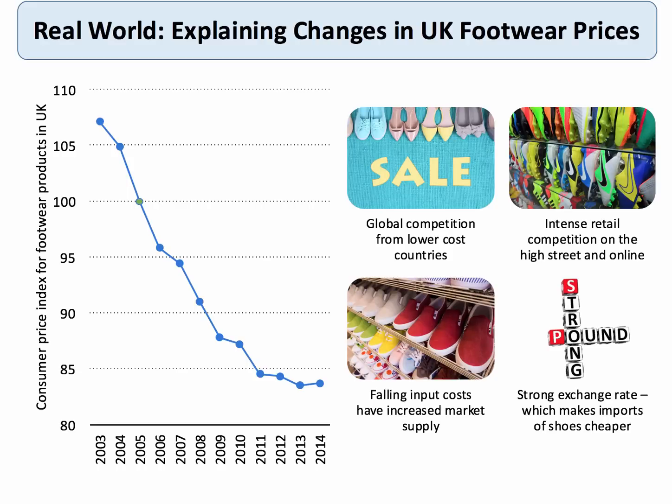Here's a good example of prices in action. This is an index of footwear products in the UK — things like sandals, shoes, and trainers. Over the last 10 years or so, there's been quite a sustained fall in the average price index for footwear products in the UK. The index has fallen from about 107 in 2003 to about 84 in 2014 — a significant fall. This is in part because of increased competition and the imports of cheap footwear from the likes of Thailand, China, Bangladesh, and Indonesia, so global competition has driven prices down.